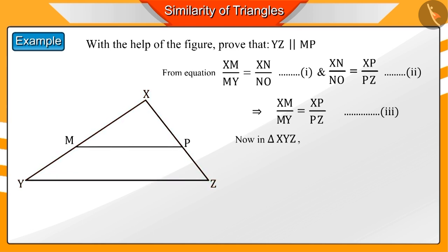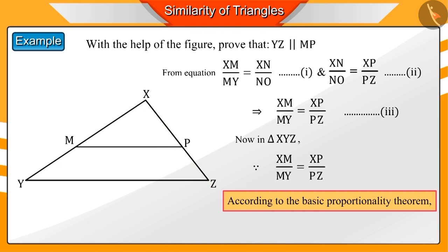Now, if we look at triangle XYZ, with the help of equation 3, we can say that the line MP divides the sides XY and XZ in the same ratio. Hence, according to the converse of basic proportionality theorem, we can say lines MP and YZ are parallel to each other.